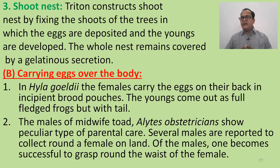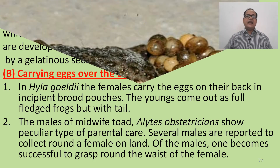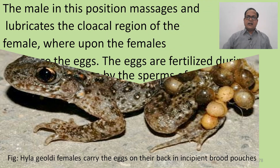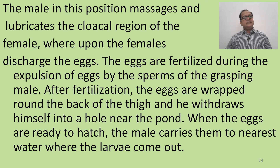The male midwife toad, Alytes, shows a peculiar type of parental care. Several males collect around a female on land. One male successfully grasps around the waist of the female and massages and lubricates the cloacal region of the female. When the female discharges eggs, they are fertilized during expulsion by the sperm of the grasping male.